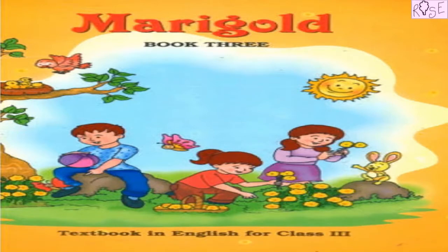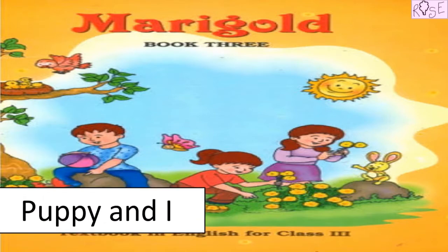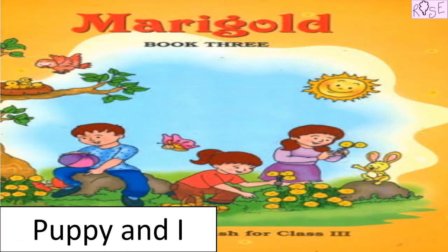Hello everyone, how are you? So today we are going to do a fun activity that has been taken from your book Marigold Class 3, from the chapter Puppy and I. Take out your book and turn to page number 67.